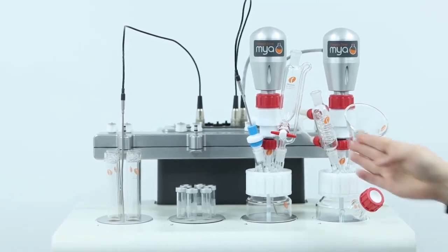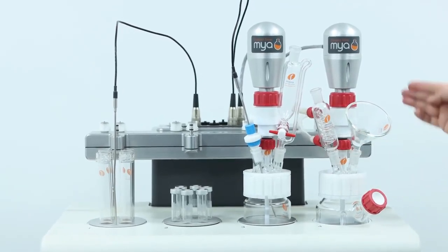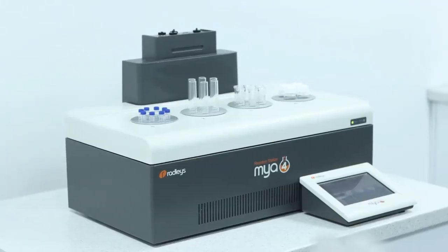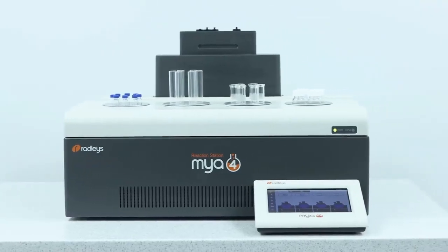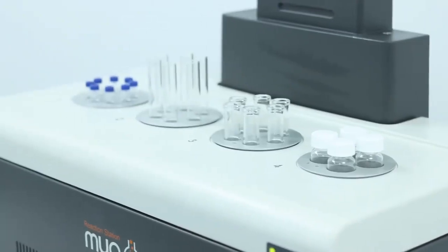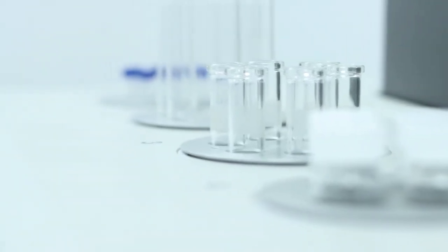The head is used to provide refluxing and inerting when using vessels and flasks. The refluxing and inerting capabilities don't apply to the multi-position tube inserts, so you could use tubes and vials with no head at all.